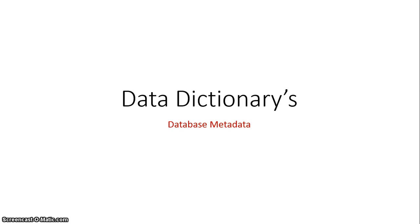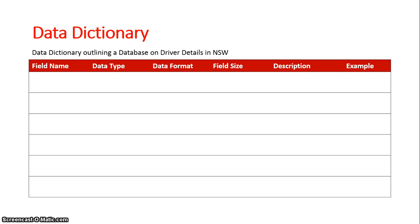We are now going to look at data dictionaries, which are basically metadata for a database. If we look at the structure of a data dictionary, we are outlining the fields within the database and their characteristics under: field name, data type, data format, field size, description, and example.